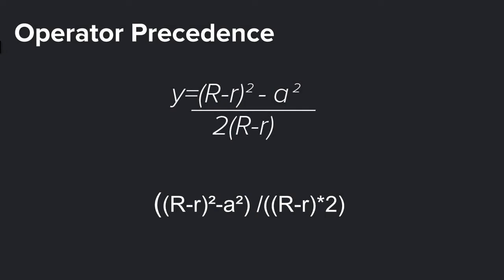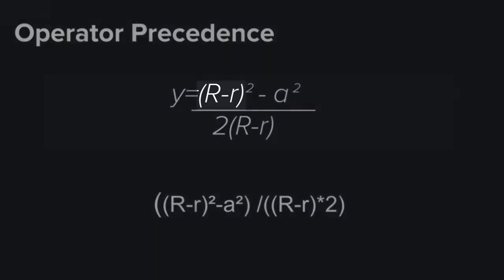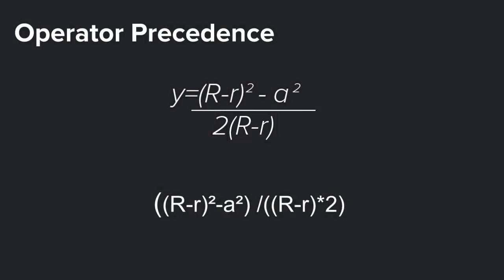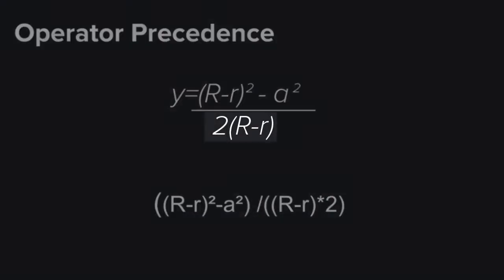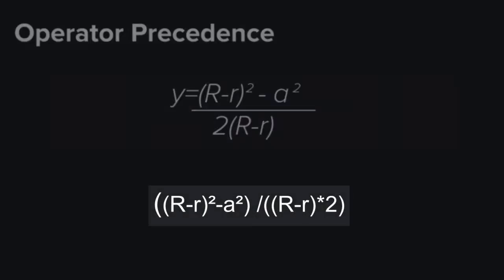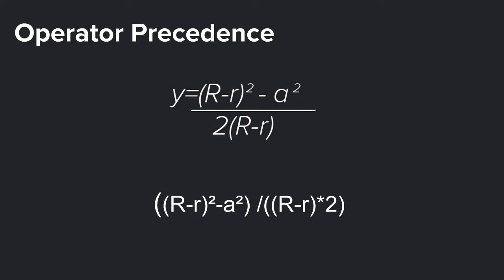Before diving into Grasshopper, I'd like to talk about a concept called operator precedence, which is used in computer programming to clarify which procedure should be performed first in a given mathematical expression. In Grasshopper we can do this by using parentheses in a hierarchical way. The order in which we would like to solve it is to start with the operations inside our parentheses, then do the operations of the divisor and dividend separately, and finally perform our division. This is how we write this expression in Grasshopper.